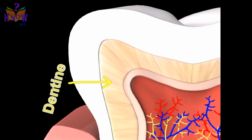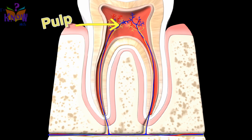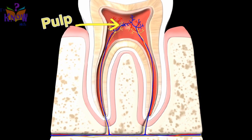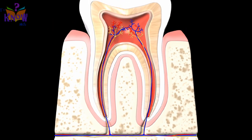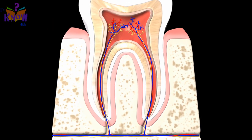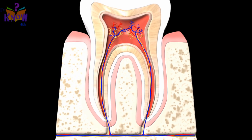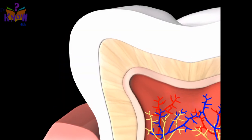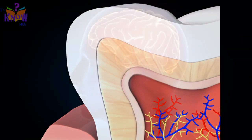Below dentine lies pulp, which has blood vessels, nerve endings, etc. It is the sensitive part of the teeth. Pulp supplies nutrients for teeth repair and growth. Cells from pulp actually produce the dentine.